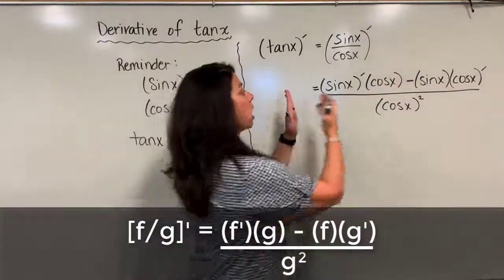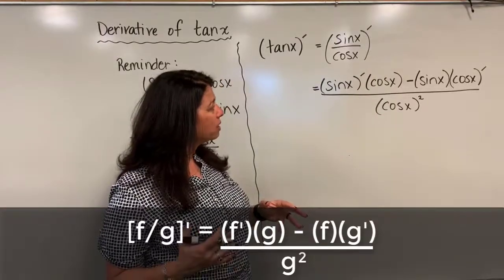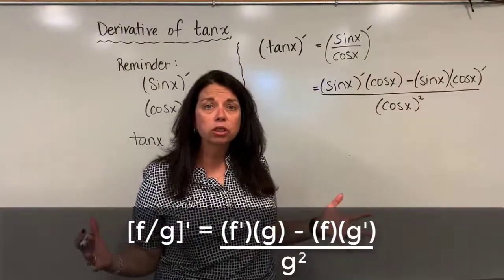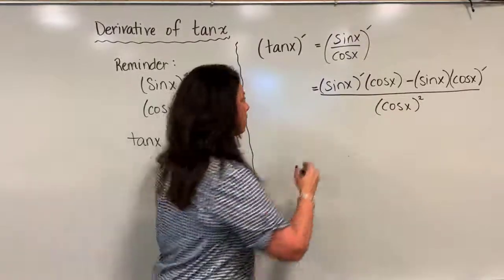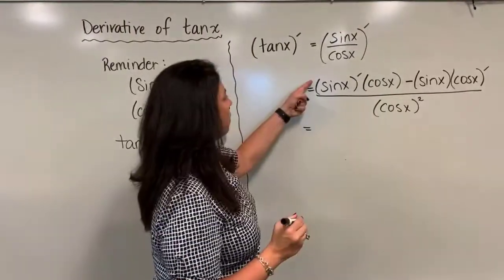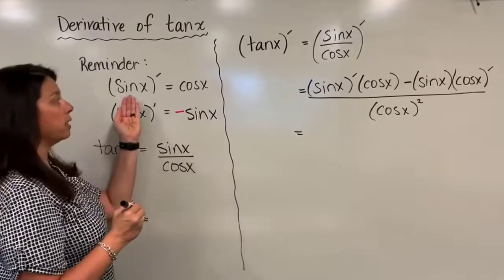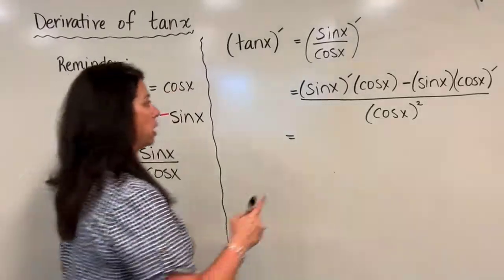So what I've done here I haven't actually taken the derivative of the pieces yet. I've just tackled the quotient rule part. Now my next step I'm going to take the derivative of the actual pieces. So derivative of sine x, we're reminded over here derivative of sine x is cosine x.